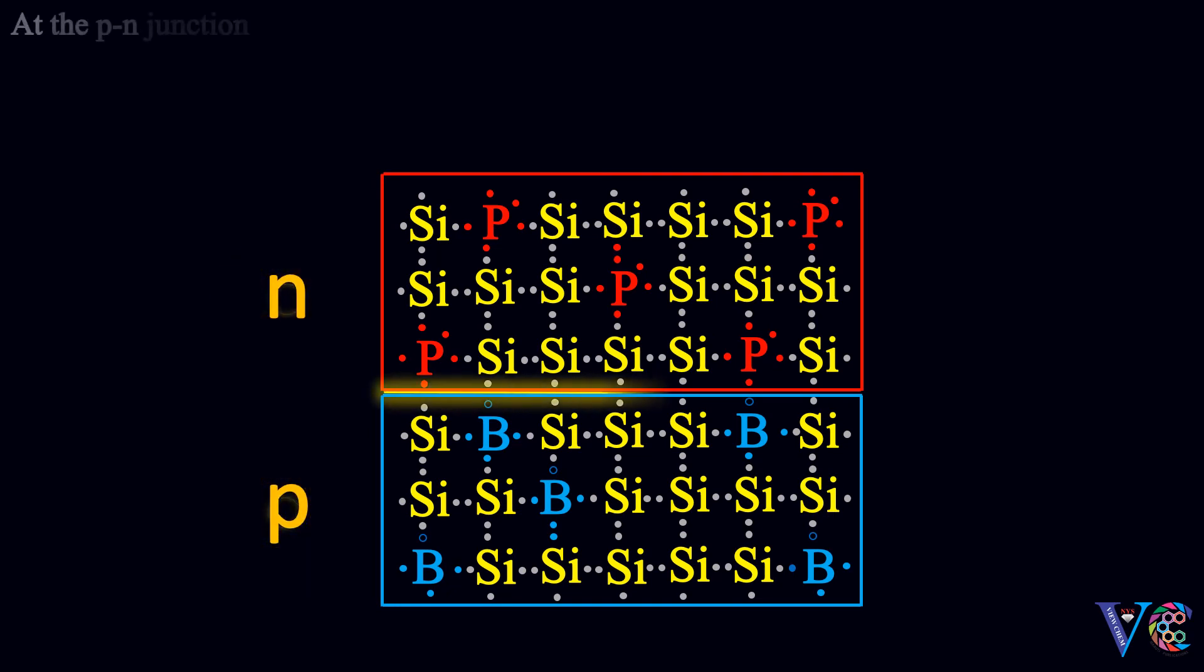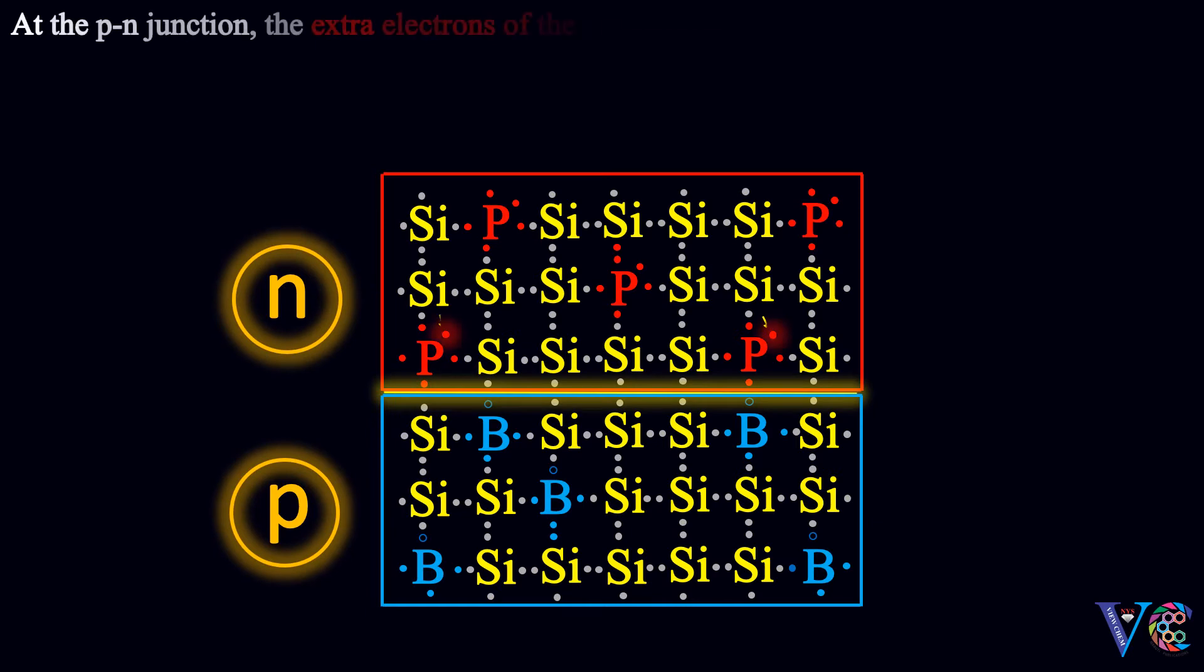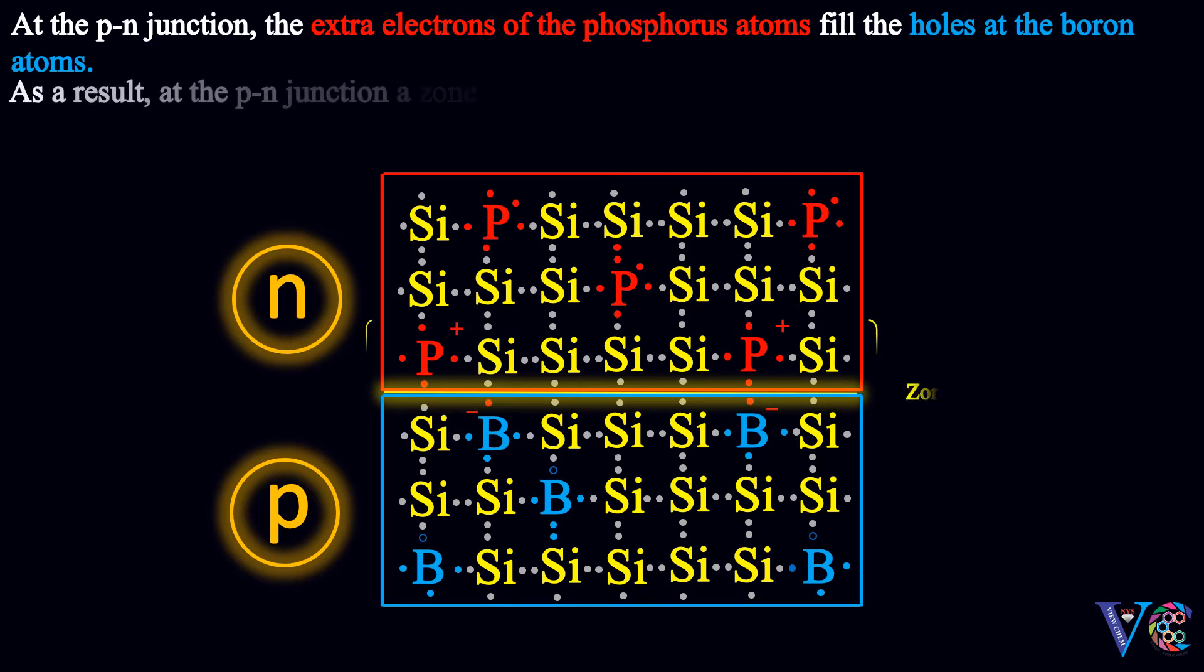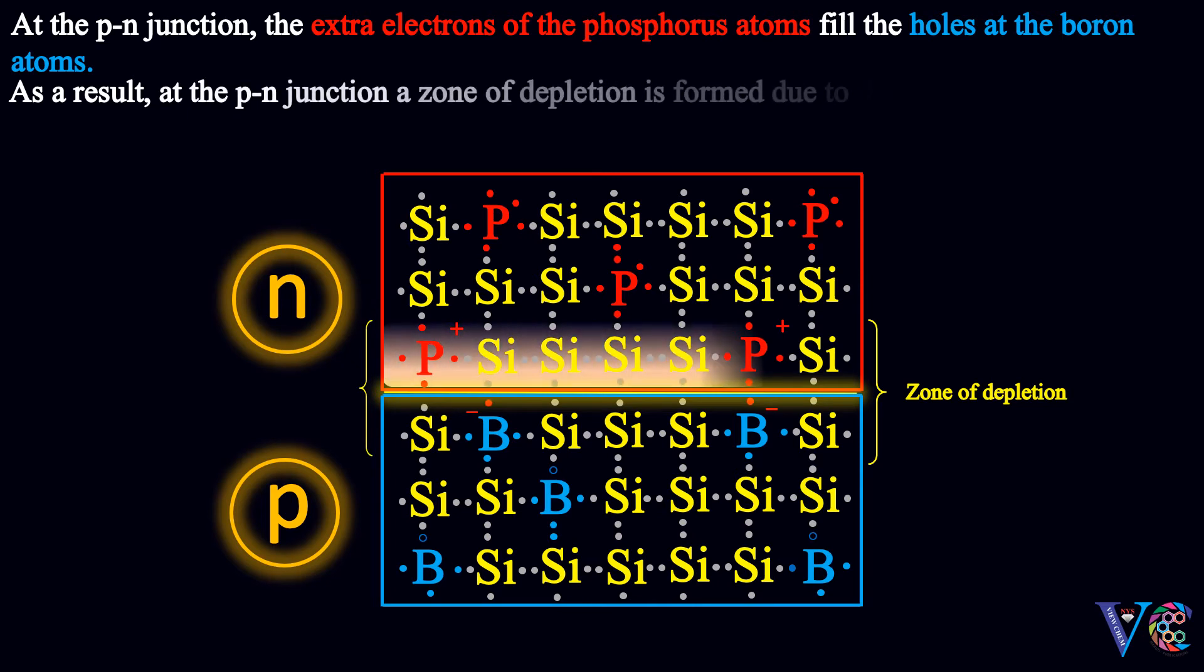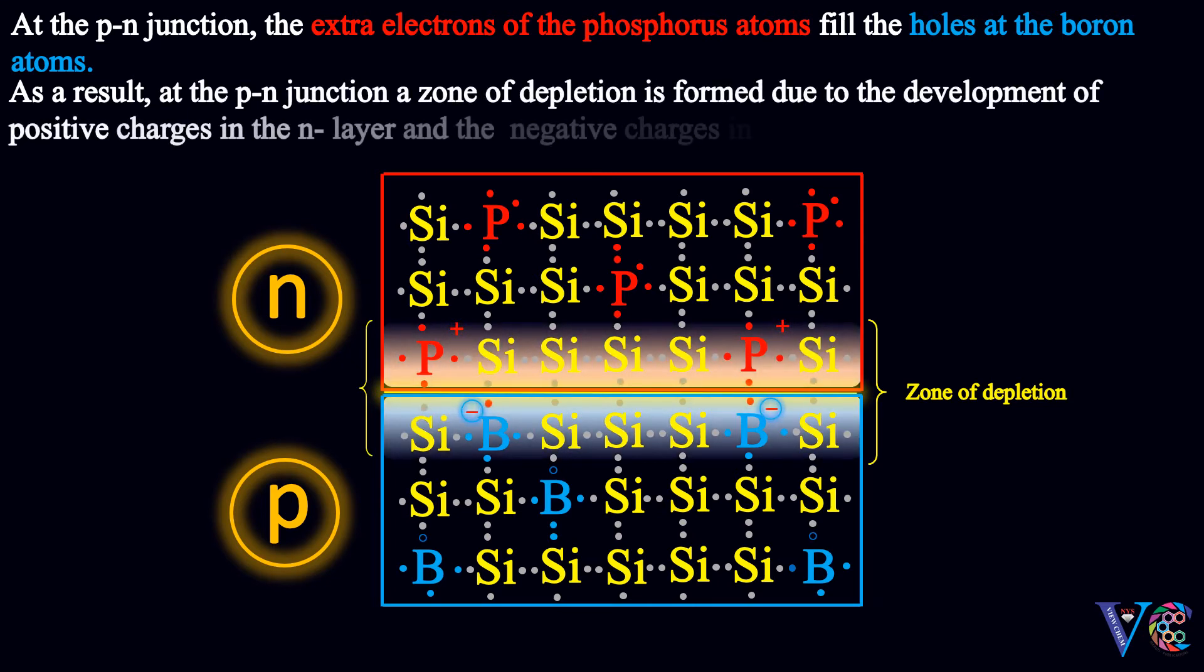At the P-N junction, the extra electrons of the phosphorus atoms fill the holes of the boron atoms. As a result, at the P-N junction, a zone of depletion is formed due to the development of positive charges in the N layer and negative charges in the P layer.